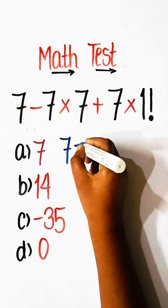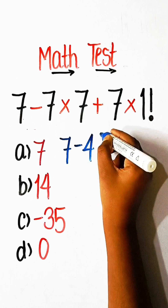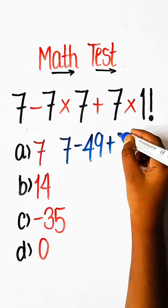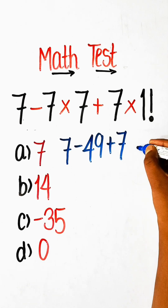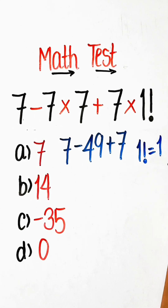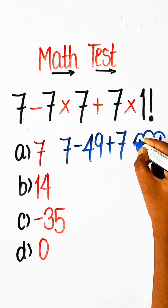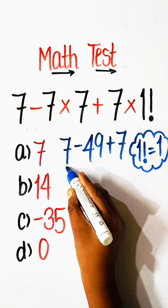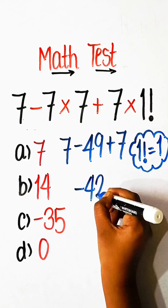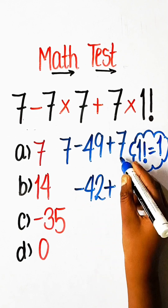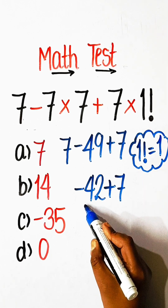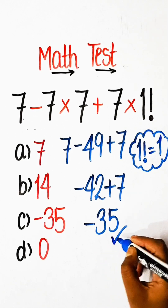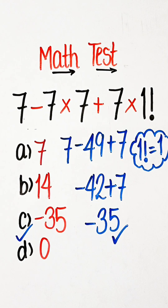We write 7 minus 7 multiplied by 7 — 7 sevens are 49 — plus 7 multiplied by 1 factorial. The value of 1 factorial equals 1, so 7 multiplied by 1 equals 7. Then 7 minus 49 is minus 42, plus 7. Minus 42 plus 7 equals minus 35.